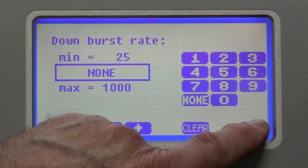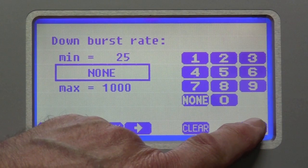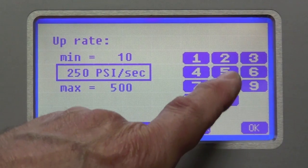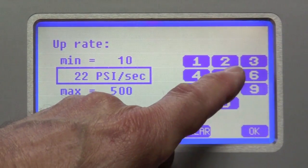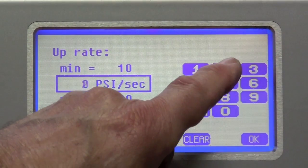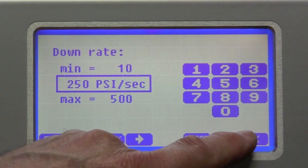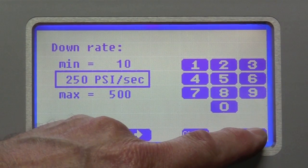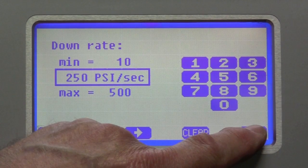The downburst rate, we don't care about that. We will burst on the way up. And the up rate. And I'm going to make it 25, 25 psi per second. And the down rate doesn't matter because it will have burst by then. So I'm going to leave it at default of 250.